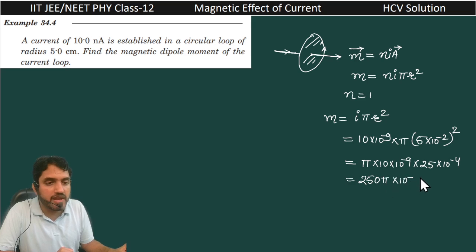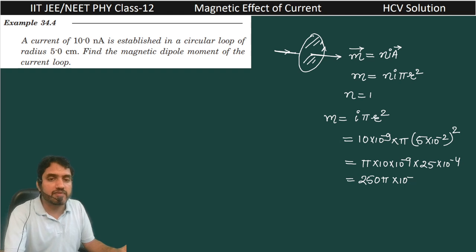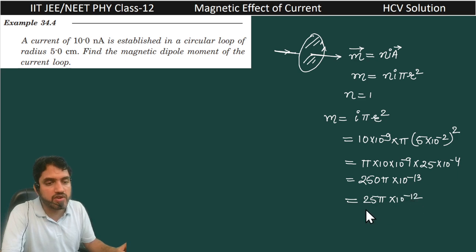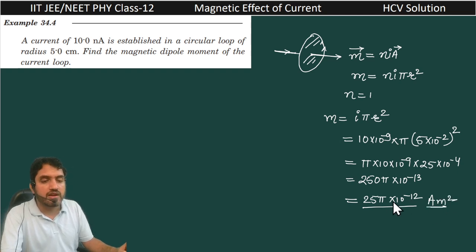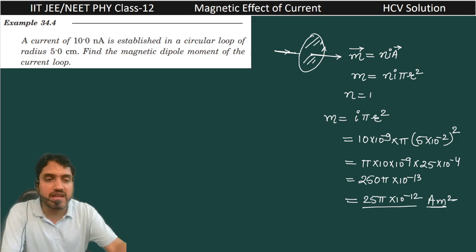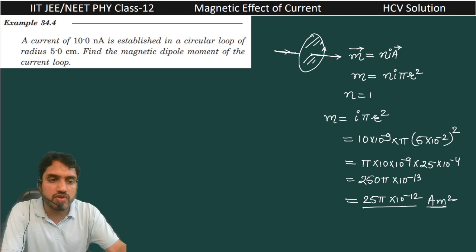So it can be written as 25 pi into 10 raise to power minus 12 and unit will be ampere meter square. If you want to multiply this pi that is 3.14 with 25, then you can find the final answer also. Thank you very much.